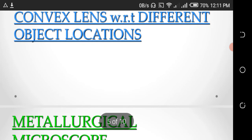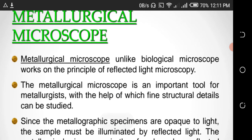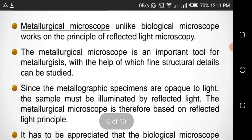Metallurgical microscope. Unlike biological microscope, it works on the principles of reflected light microscopy. The metallurgical microscope is an important tool for metallurgists with the help of which fine structural detail can be studied.